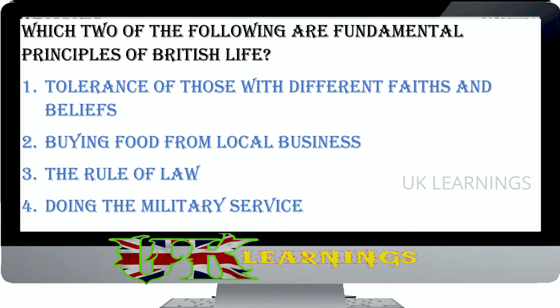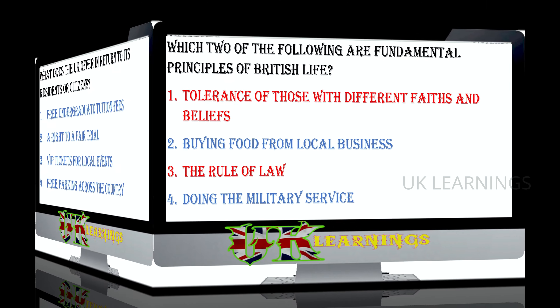Which two of the following are fundamental principles of British life? Tolerance of those with different faiths and beliefs, buying food from local businesses, the rule of law, doing military service. The correct answers are tolerance of those with different faiths and beliefs and the rule of law are fundamental principles of British life.